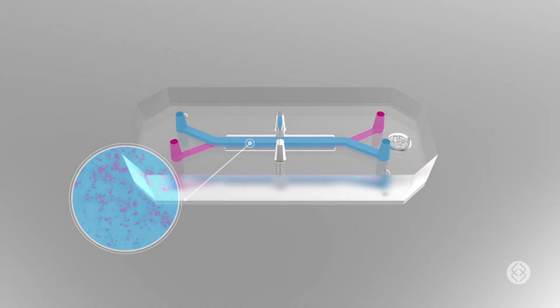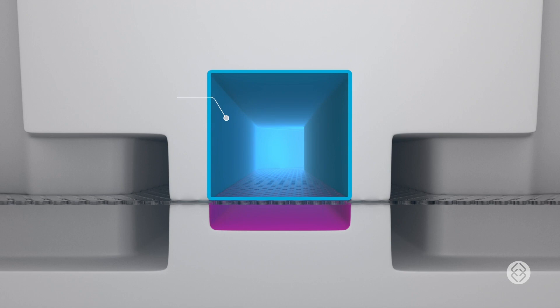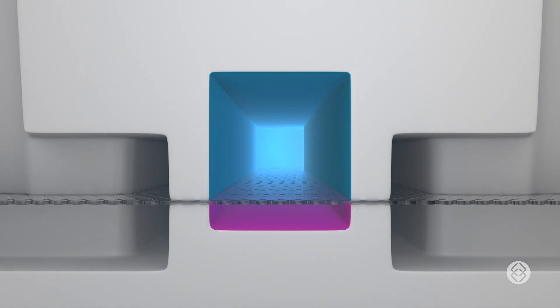Our organ chips are plastic devices lined with human cells. They contain two compartments or channels which are separated by a porous membrane. We're able to seed cells on top and below that membrane. The membrane separates the cells, provides spatial distance between them, but the cells are able to communicate chemically through the pores.